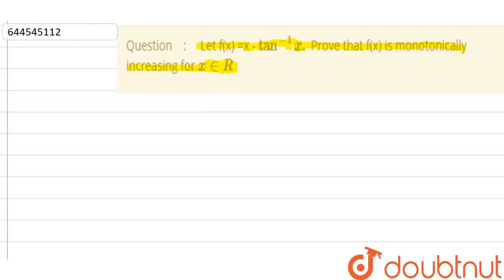Now when we can say that any function is monotonically increasing, the first derivative of that function f'(x) must be greater than or equal to 0.